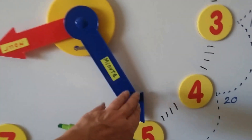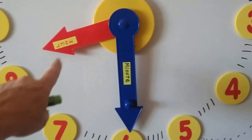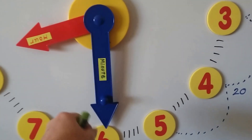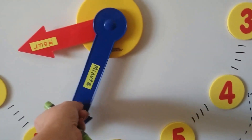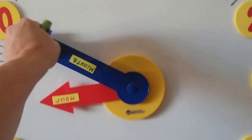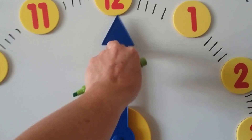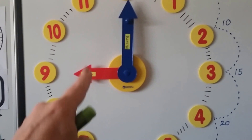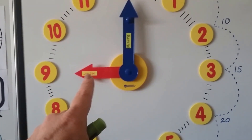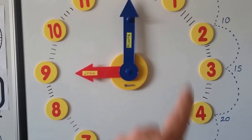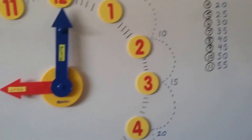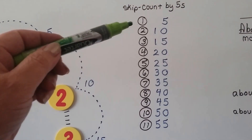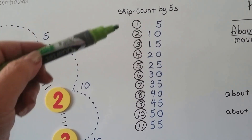When the minute hand gets to the six, that would be 8:30 — right in the middle. As the minute hand keeps going, it's connected to the hour hand through a gear, which makes the hour hand move very slowly. When the minute hand gets back up to the 12, it's nine o'clock. So as the minute hand goes around, the gear connection makes the hour hand move.